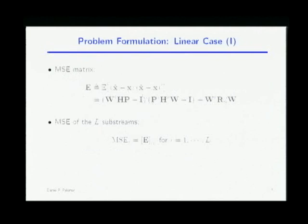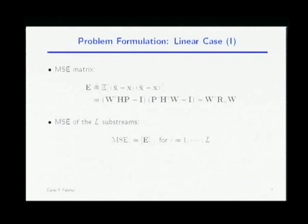Let me start by defining the mean square error matrix. X here is the transmitted symbols, X-hat is the estimation, so the difference is the error vector. This is the covariance matrix of the error — what I call the mean square error matrix. For the linear case, it can be written as a function of P the precoder and W the receiver. The mean square errors of the different substreams are contained in the diagonal elements of this matrix.